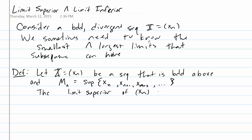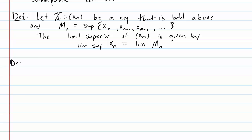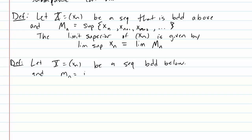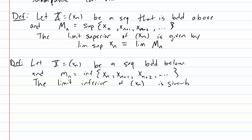The limit superior of x_n is defined as lim sup x_n, which is the limit of M_n — what happens to the supremum as you look at each progressive tail. Similarly, we define the limit inferior: let x = (x_n) be a sequence bounded below, and let little m_n be the infimum of that tail {x_n, x_{n+1}, x_{n+2}, ...}. Then lim inf x_n is the limit of little m_n.